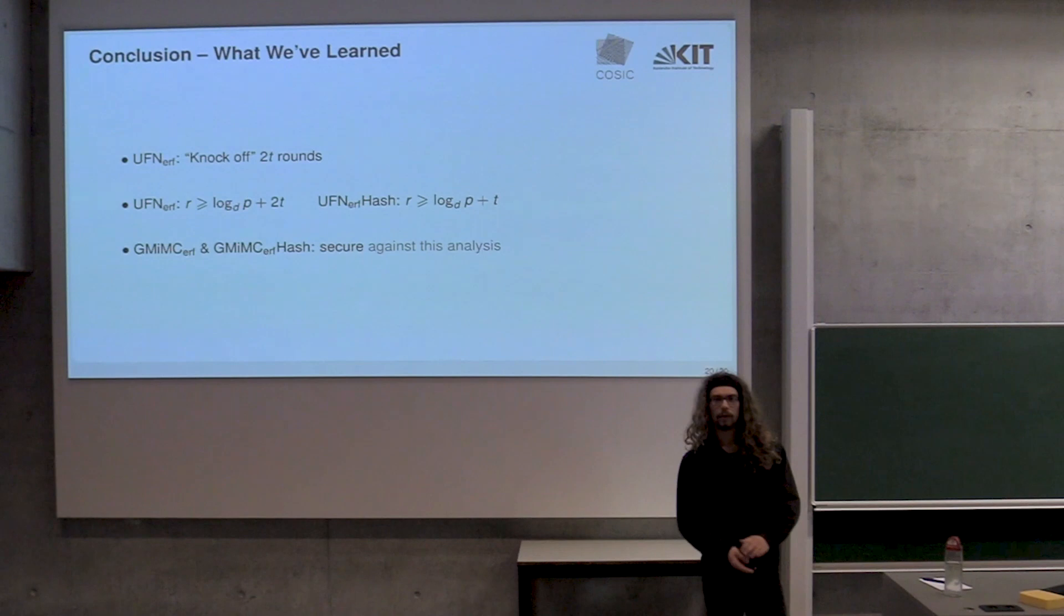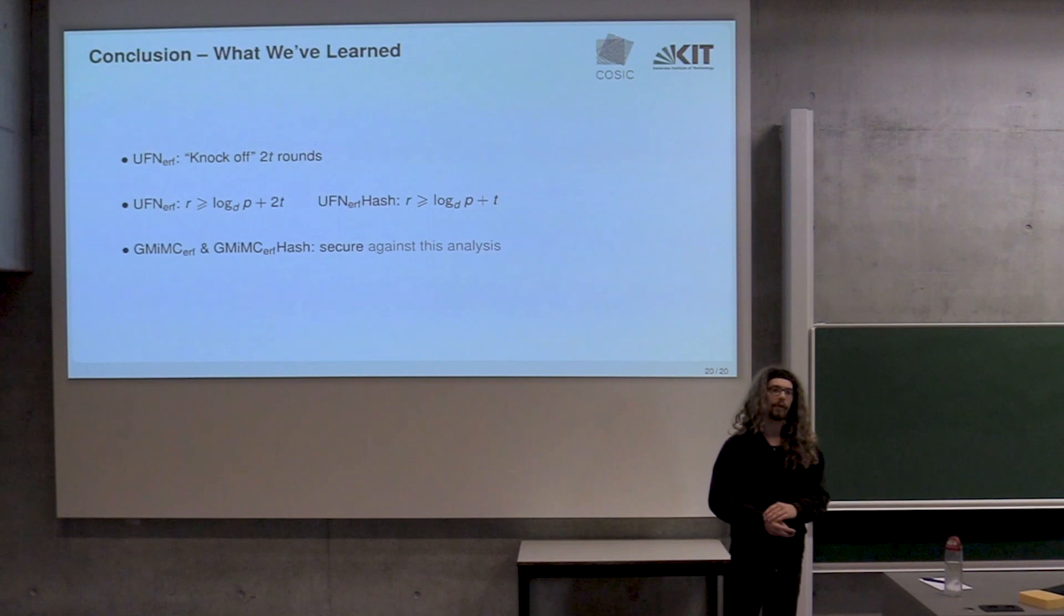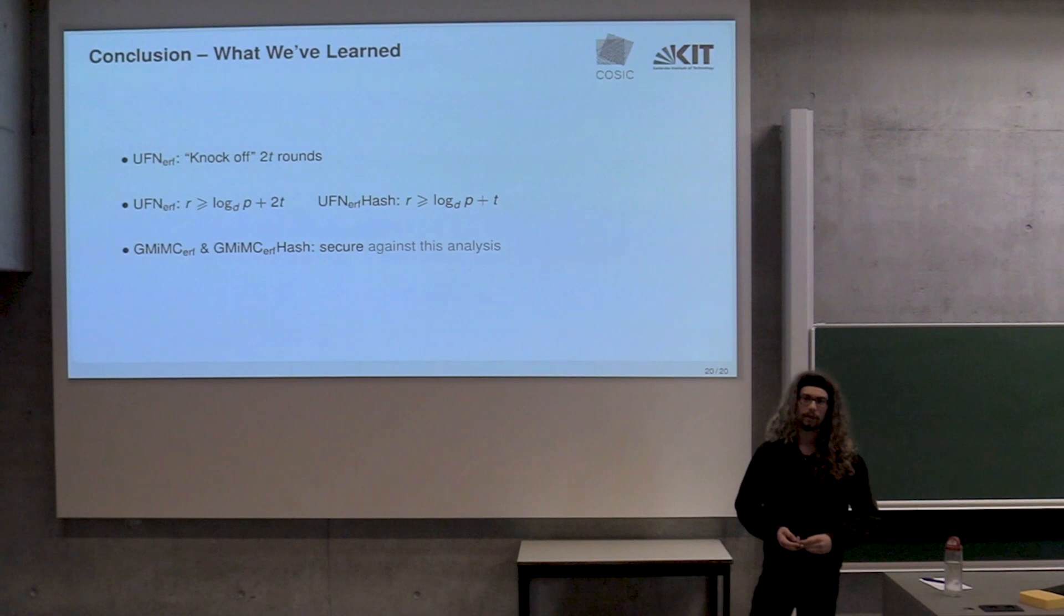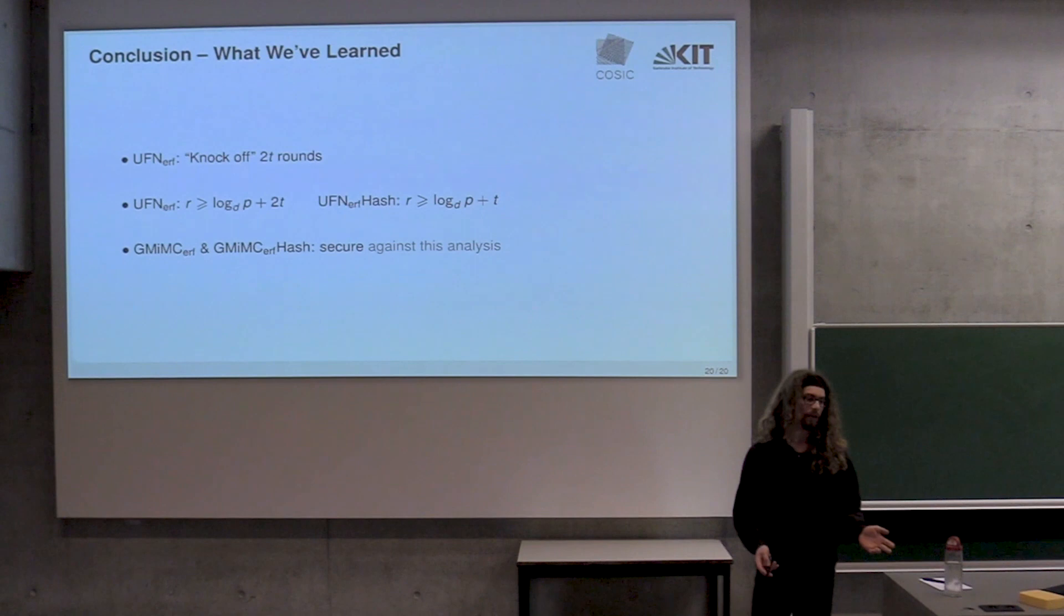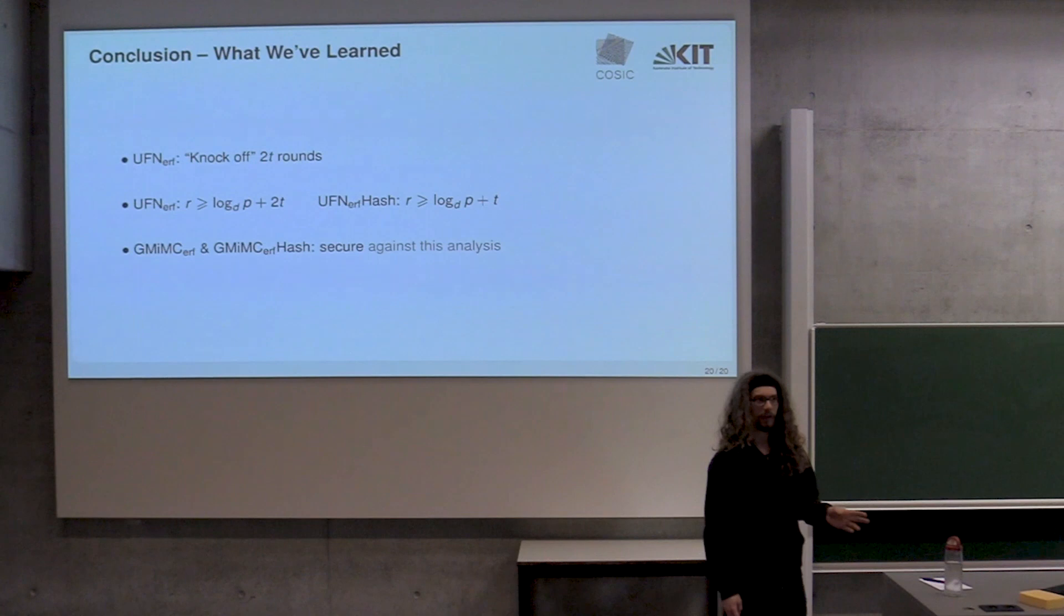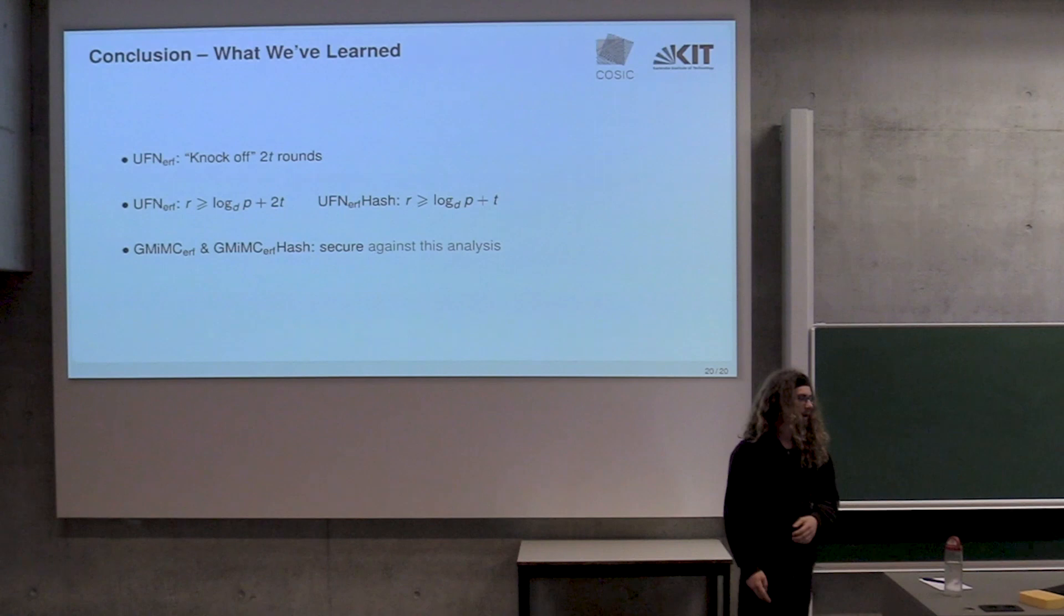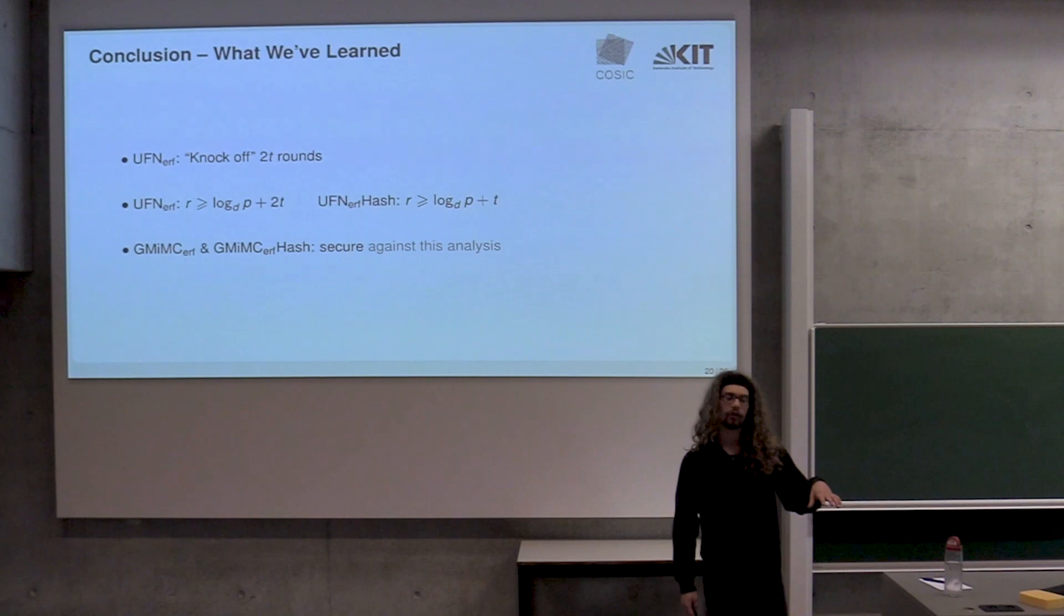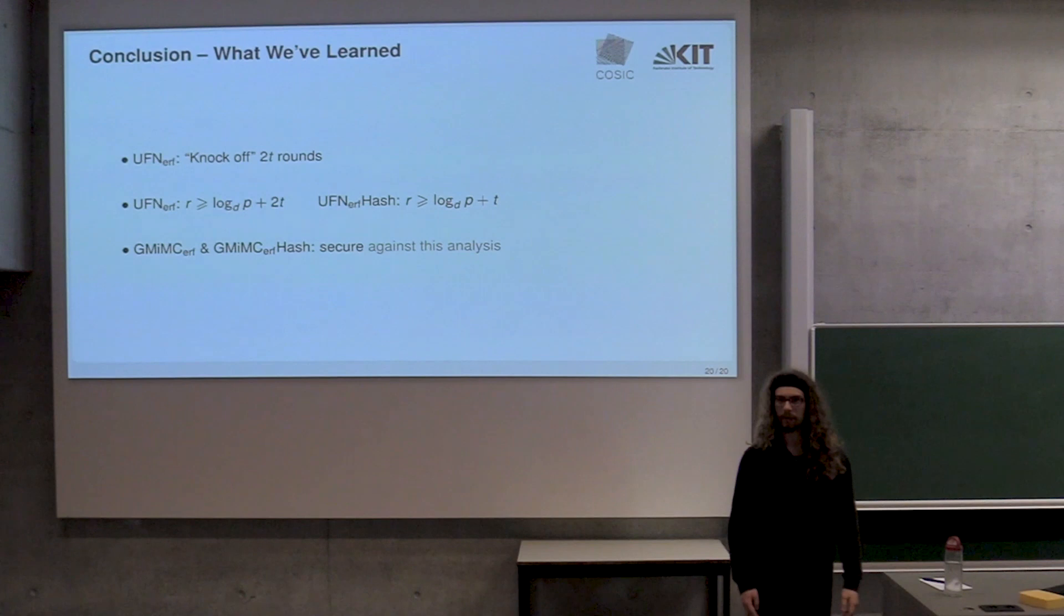To conclude, we found a way to knock off two T rounds for an unbalanced Feistel network in the expanding round function setting. This leads us to the conclusion that if you want to use that for a block cipher, you should use at least log P to the base D plus two T rounds. For the hash functions, as far as I know, the branch subtraction thing is not applicable. So it should be okay to just add T rounds, at least. Probably you want more. GMiMC and GMiMC hash, which were the initial motivator for this, they both turn out to be secure against these kinds of attacks. That was it for me. Thank you.